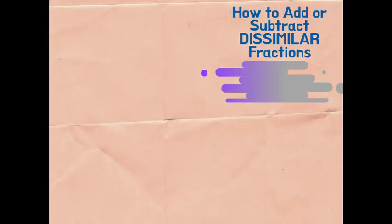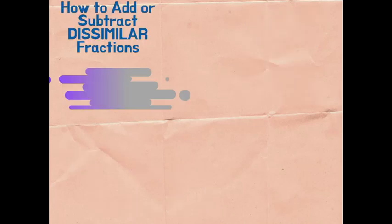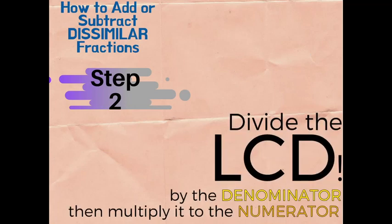What are the steps in doing the butterfly method? Step one is to get the LCD, or the least common denominator. If you don't know how to get the least common denominator, just click the video on the bottom right part of this video. Step two: divide the LCD by the denominator, then multiply it to the numerator.